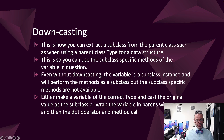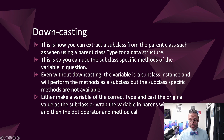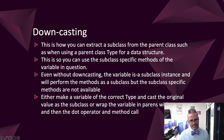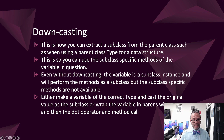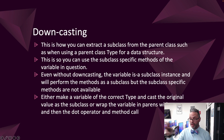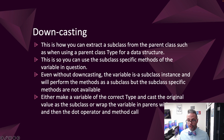Downcasting is how I can extract a subclass from the parent class type, such as when using a data structure, so I can use the subclass-specific methods of that variable. We just use parentheses around the type to cast it and then assign that into a variable of that type — just like casting from a double to an int. Even without downcasting, the variable still is a subclass instance and performs methods as a subclass, but subclass-specific methods will not be available unless you downcast. You can either make a variable of the correct type and cast the original variable into it, or wrap the variable in parens with the cast and chain the method call directly. If you're starting out, I recommend making the variable the correct type first and then downcasting onto it.